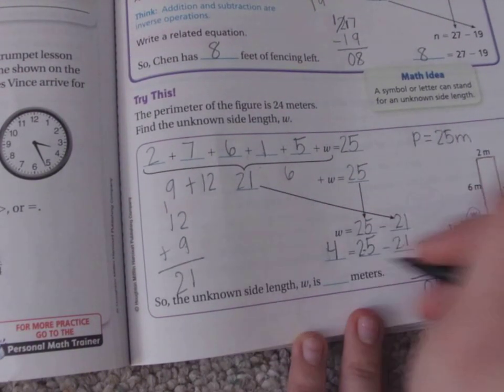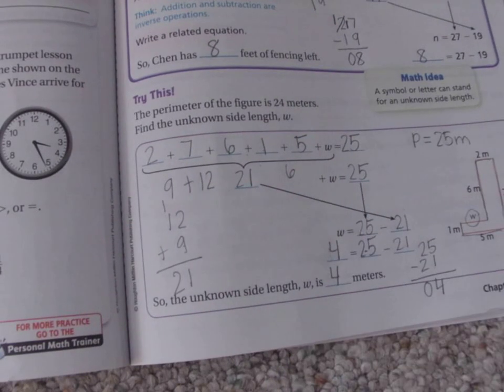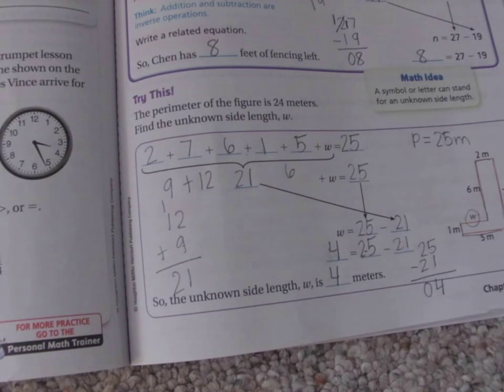So the unknown side length, W, is 4 meters. Woo! That is a lot of work. And you guys, I didn't remember doing this stuff until I was, like, in middle school. So you guys are rock stars for even trying this right now.